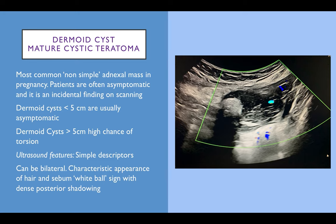Dermoid cysts, or mature cystic teratomas, are the most common non-simple adnexal mass in pregnancy. Patients are often asymptomatic and it is just an incidental finding, particularly at first trimester screening. The ultrasound features are quite classic — pattern recognition should help you diagnose these. They can be bilateral and have a characteristic appearance of hair and sebum with horizontal striations and very often a white ball sign with dense posterior shadowing. Dermoid cysts less than 5 cm are usually asymptomatic and managed conservatively; those greater than 5 cm have a much higher chance of torsion, and the woman should be counselled about this risk.